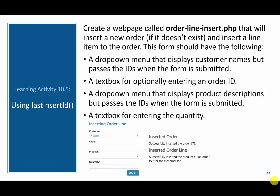In this video, we're going to go over another example of how to use last insert ID. Specifically, we're going to create a new page called order line insert. On this page, we're going to have four elements in our form: a dropdown containing all the customers, a text box where the user can enter an order ID, a product dropdown where the user can select a product, and a quantity field where the user types in a number and clicks submit.